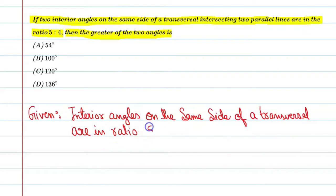So now we will take a common factor. Solution: Let the common factor be x, so angles will be 5x and 4x.